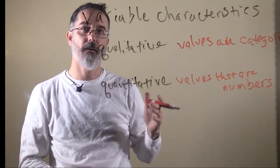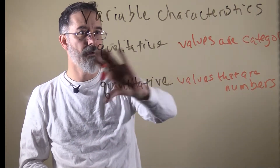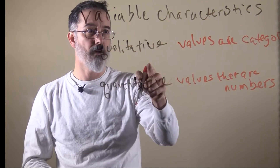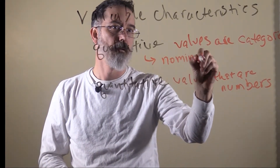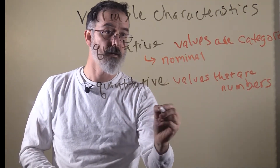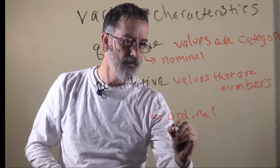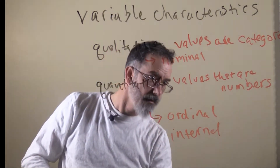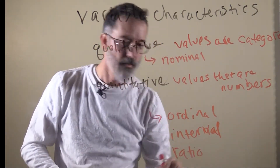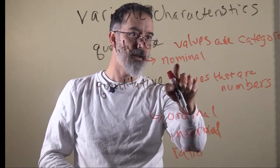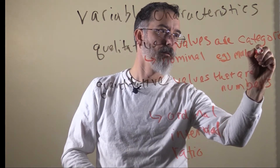If you recall from the earlier topic about the scales of measure, these actually map onto the scales of measure pretty well. If a variable is nominal, then it is going to be qualitative. If a variable is ordinal, interval, or ratio, then it is going to be quantitative. So nominal variables have categories like male or female.